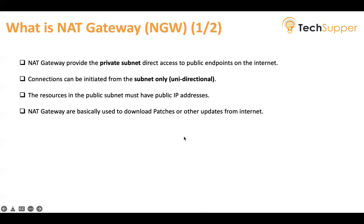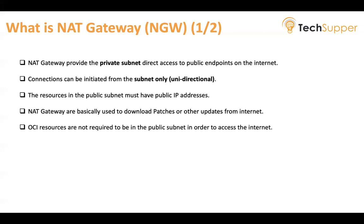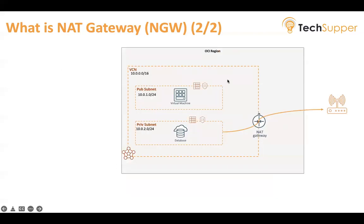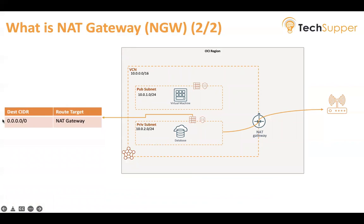For example, you have a database residing in your private subnet and you want to apply some patches. Those patches are on the internet, so to download them from your private subnet you can use NAT Gateway, which will allow that internet access. OCI resources are not required to be in a public subnet in order to access the internet because of NAT Gateway. In the routing table, the destination is 0.0.0.0/0 and the route target will be your NAT Gateway.